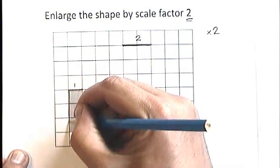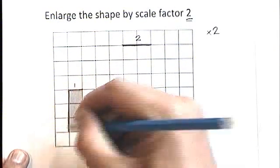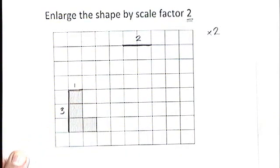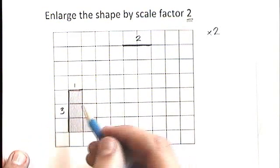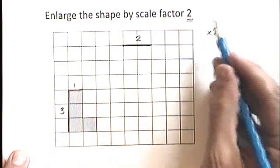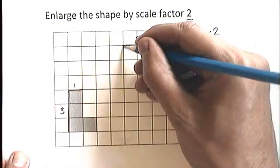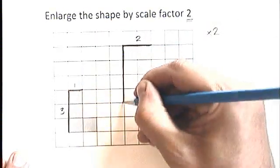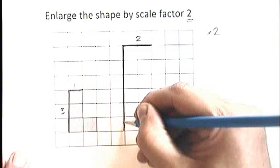If you look down the side here, of the smaller shape, that distance is 3, 3 centimeters. Again, I'm using the same scale factor, times by 2. So 3 times 2 is 6. I need to do 6 squares down. There's 2, 4, 6.